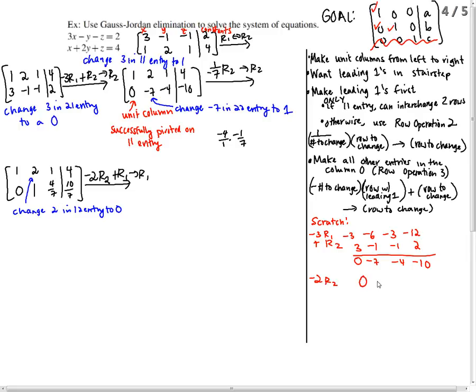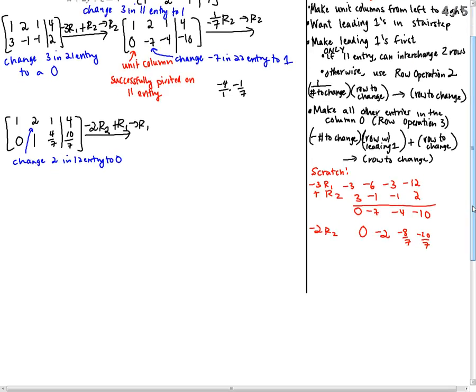So I get 0, 2, negative 2, rather. Then I get negative 8 over 7, negative 20 over 7. Because you're multiplying, you have 4 over 7 times negative 2 over 1. Top times top, bottom times bottom. I'm going to add that to row 1. 1, 2, 1, 4. 1, 0.